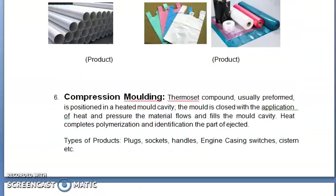Compression molding: a thermoset compound, usually a preform, is positioned in a heated mold cavity. The mold is closed with the application of heat and pressure. The material flows and fills the mold cavity. Heat completes polymerization and solidification, and the part is ejected. Types of products are plugs, sockets, handles, engine casings, switch systems, etc.